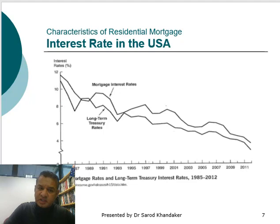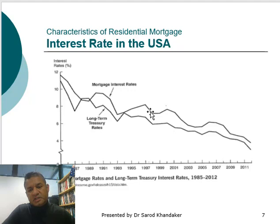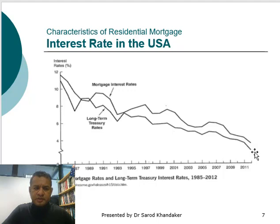This slide shows the interest rate history in the USA. During 1985 the interest rate in the US was around 12%, then there was a big drop around 1987, it increased again around 1989, and then started declining more steadily. The US interest rate is quite low compared to the Australian market, but the key factor is that the interest rate decreased steadily after 1985.